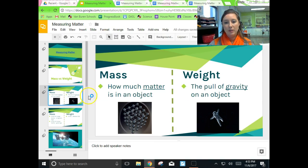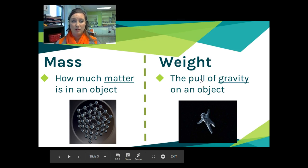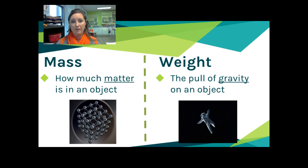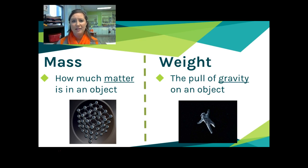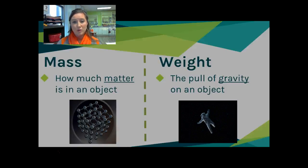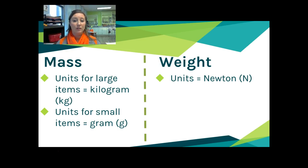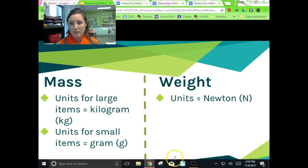Now I want to talk briefly about units. You know that after every single number in science class you have to have a unit — it's the same in math. Because we're dealing with a lot of different measurements, having the proper units tells us which way you're actually measuring. The units for mass when measuring large items is the kilogram, abbreviated kg. For small items it's the gram, abbreviated g. Let's get that down in our notes.